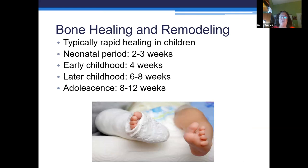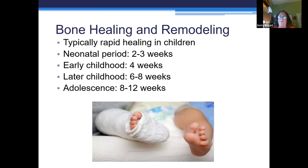The surprising thing is children heal very quickly. Infants can fracture something and be healed in two to three weeks. Children ages two to six might only need a cast for one month. As you get older, you need more and more time — adolescents need eight to twelve weeks because the bones are more brittle. They take longer to form that little callus to hold the bone straight, but younger kids heal a lot quicker.